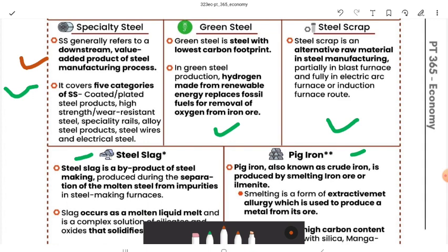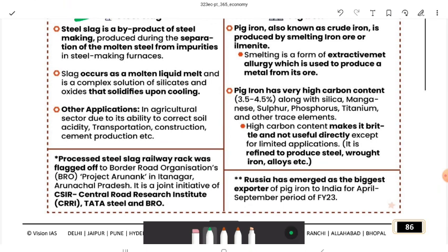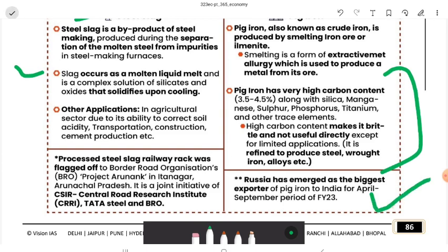Steel scrap is an alternative raw material used partially in a blast furnace or fully in an electric arc furnace. Steel slag is a bi-product: when molten steel is produced, impurities are separated out as slag. Pig iron, also called crude iron, is produced through smelting — a form of extractive metallurgy — and is released with high carbon content. Russia is the biggest exporter of pig iron to India.